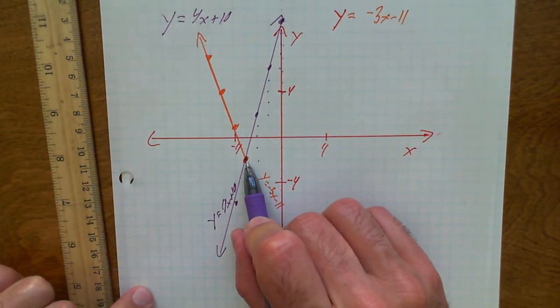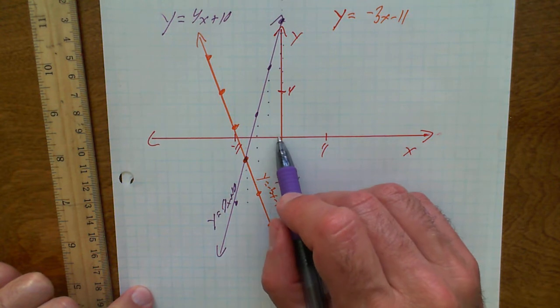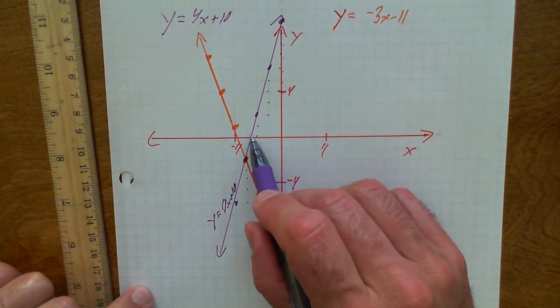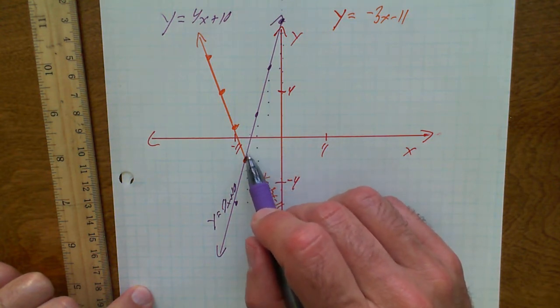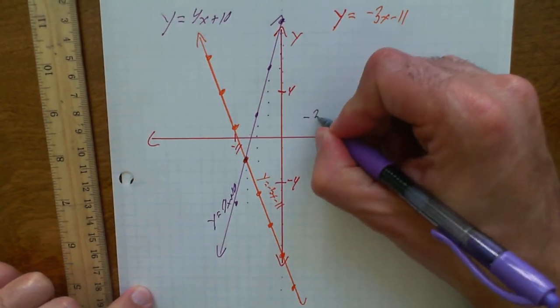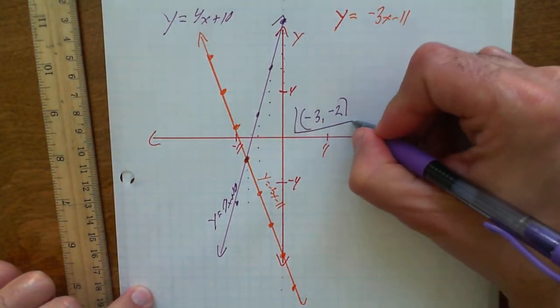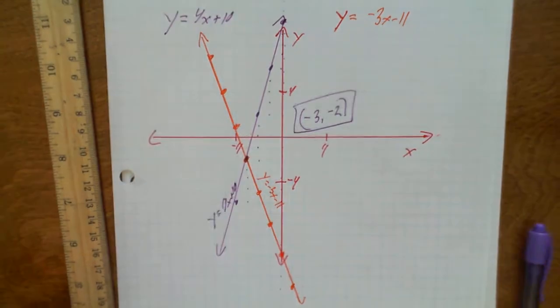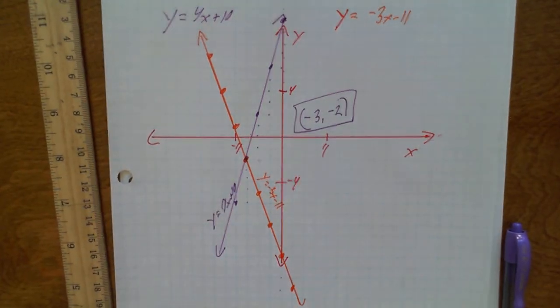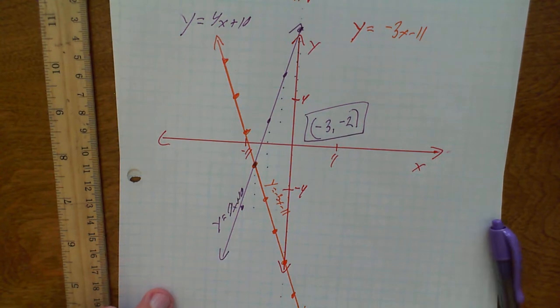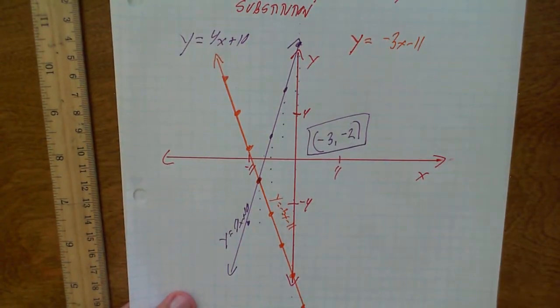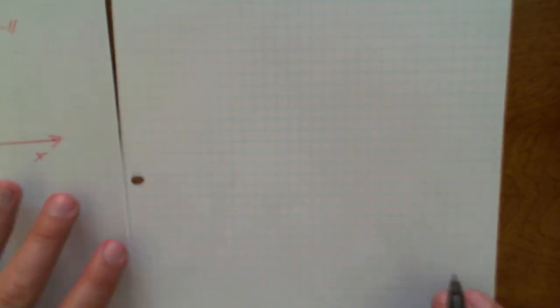Let's write the answer down the way I want you to write it. Backwards negative 3, down negative 2 — there's my answer: negative 3, negative 2. But that's not how I want you to solve this. When I have this on the test, I'm going to say solve it through substitution, so we're going to have to get this answer a different way.